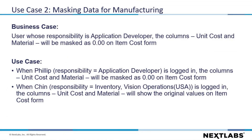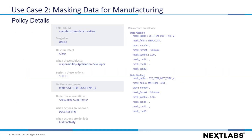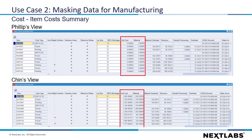In the second use case, we will cover how to mask data for manufacturing based on policy. For this use case, the columns Unit Cost and Material will be masked as 0 on the item cost form if the user's responsibility is Application Developer. We will use two users, Philip and Chin, to demonstrate this. Before we move into the demo, let's review the policy details and expected results. Here are the policy details. These are the expected views for Philip and Chin when viewing the item cost summary.